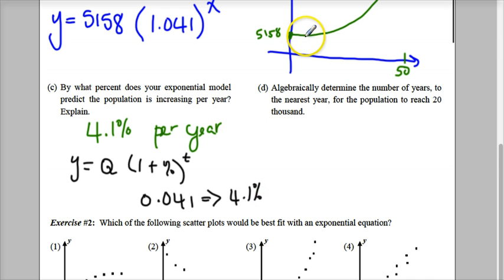Now, the last one said, algebraically, meaning solve it out by hand, determine the number of years to the nearest year, so that's the nearest whole number, for the population to reach 20,000. So using my formula I found, I want this to be, let's make, this is the formula I found, I want to know what is X when it's going to reach 20,000. So again, let's solve this out.